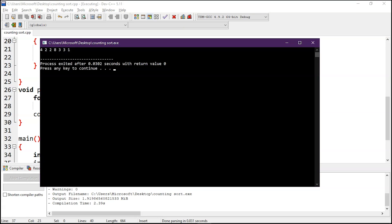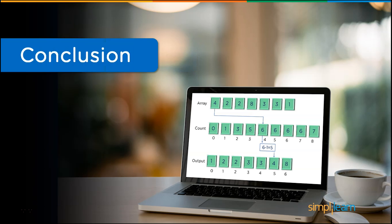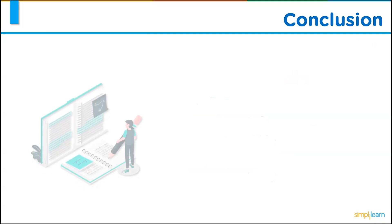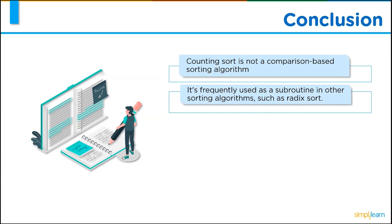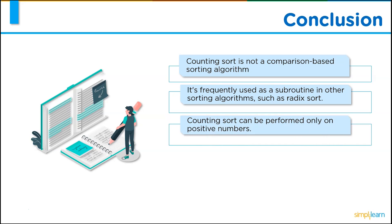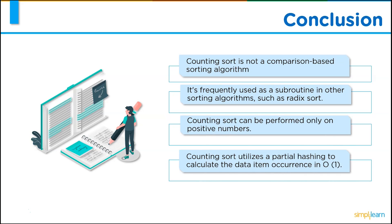Let's sum up what we have learned from this session. First, counting sort is not a comparison-based sorting algorithm. Next, it is frequently used as a subroutine in other sorting algorithms such as radix sort. Next, counting sort can be performed only on positive integers. Finally, counting sort utilizes partial hashing to calculate the data item occurrence in O(1).